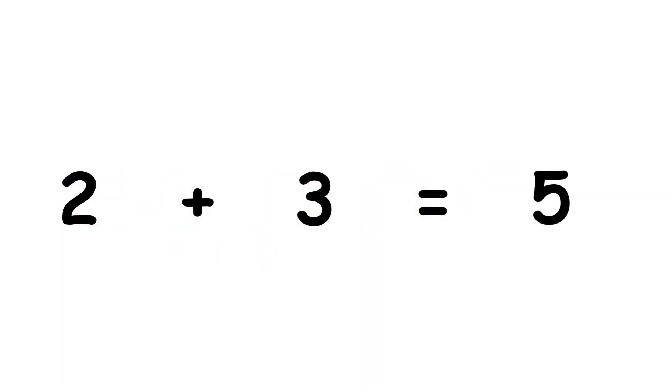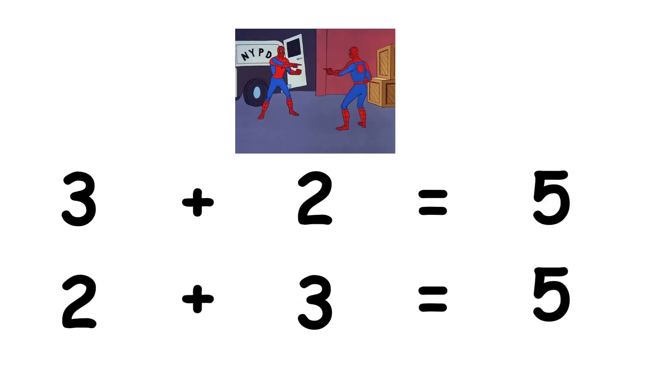Addition is commutative, so changing the order of the terms doesn't affect the sum. Three plus two and two plus three are both equal to five.